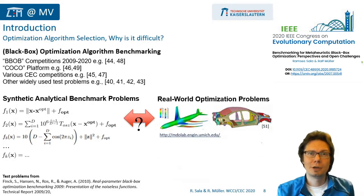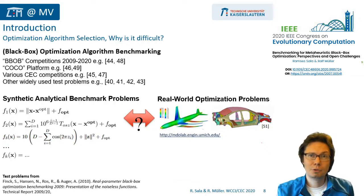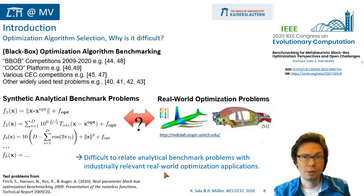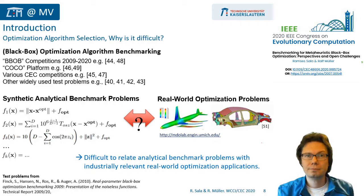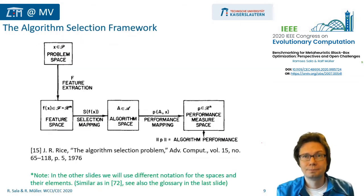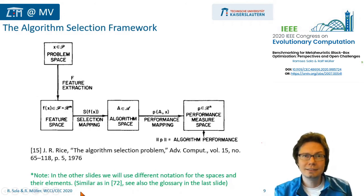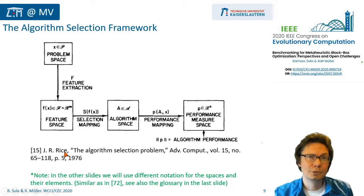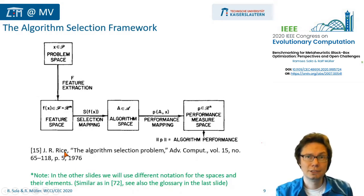For many of these benchmark problems, there are no ways to relate performance results on such problems to performance on real-world problems of technological relevance and vice versa. So, what can we do? How to select algorithms? In 1976, John Rice proposed a general framework for algorithm selection, which can be useful to identify some specific open challenges and research directions.